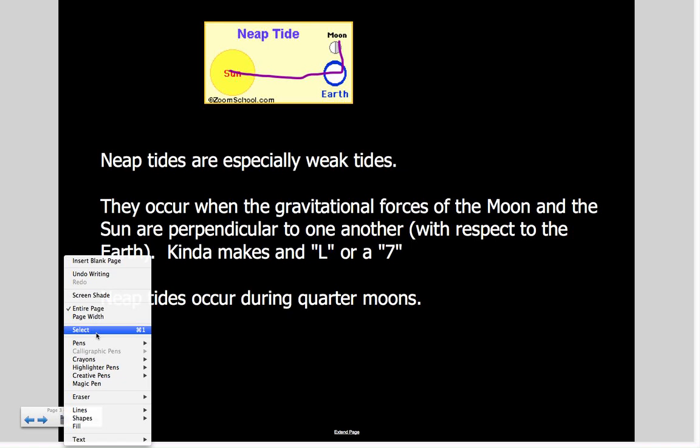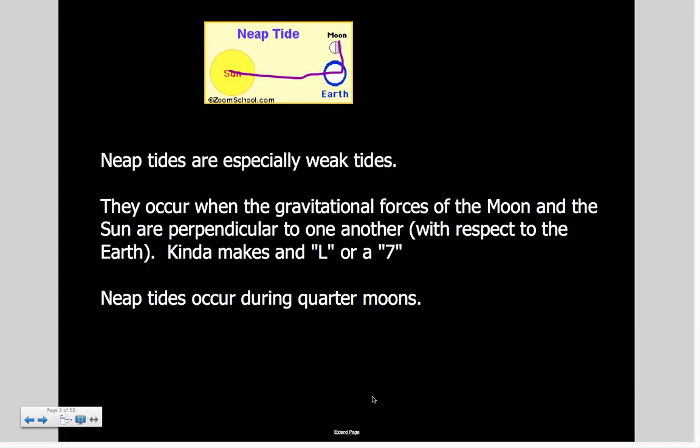One of the students two years ago said that neap has four letters in it and there are three celestial bodies—the Sun, Earth, and Moon. Three plus four gives me seven, which is the perpendicular shape. That's just another way to help you remember these.